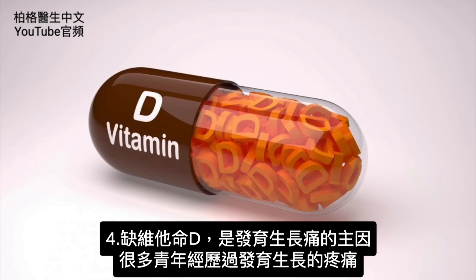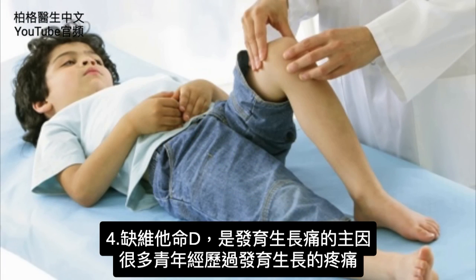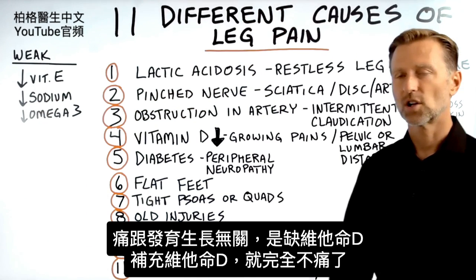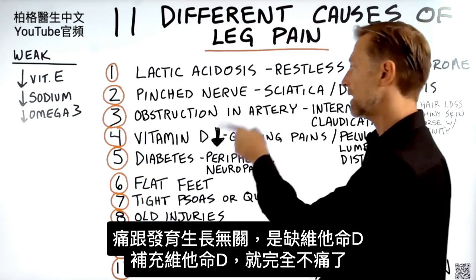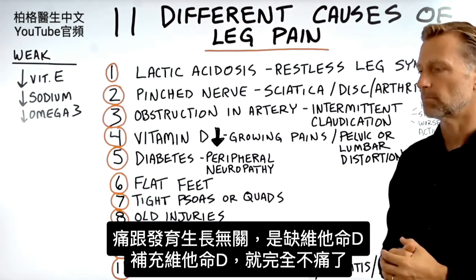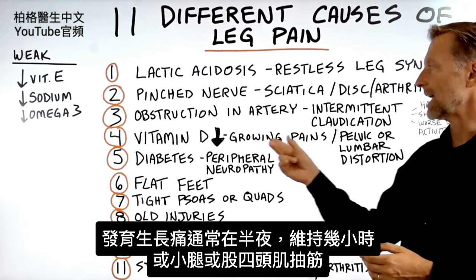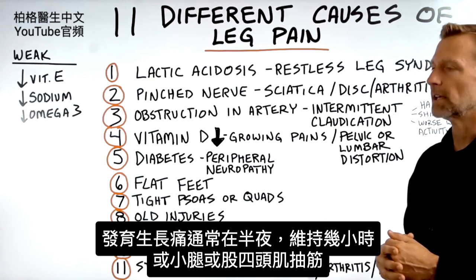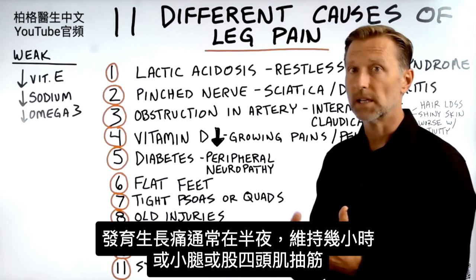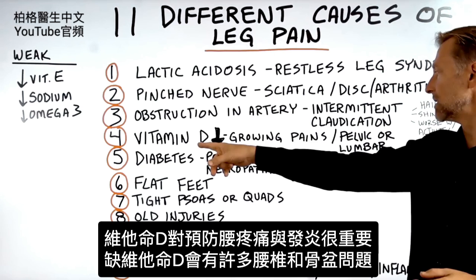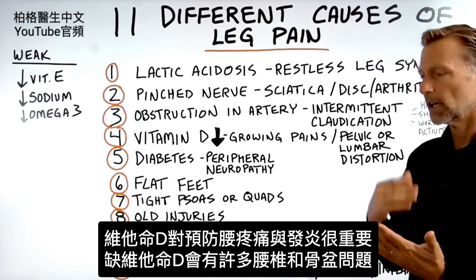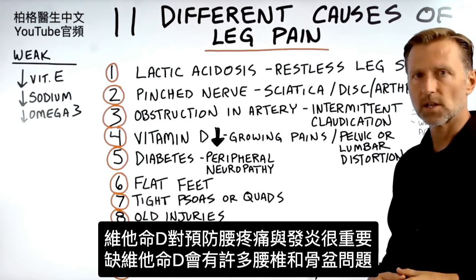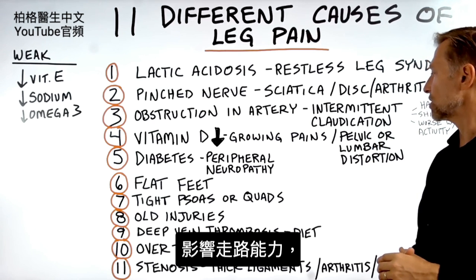Number four: low vitamin D, which is behind growing pains. A lot of teenagers experience growing pains, but it has really nothing to do with growing — it's a vitamin D deficiency. If you give them a little vitamin D, it completely goes away. They usually get this at night, with cramping in their calves or quads. Vitamin D is really important in preventing inflammation and pain in your lower back. If you're deficient, you can have lumbar and pelvic problems affecting your ability to walk.